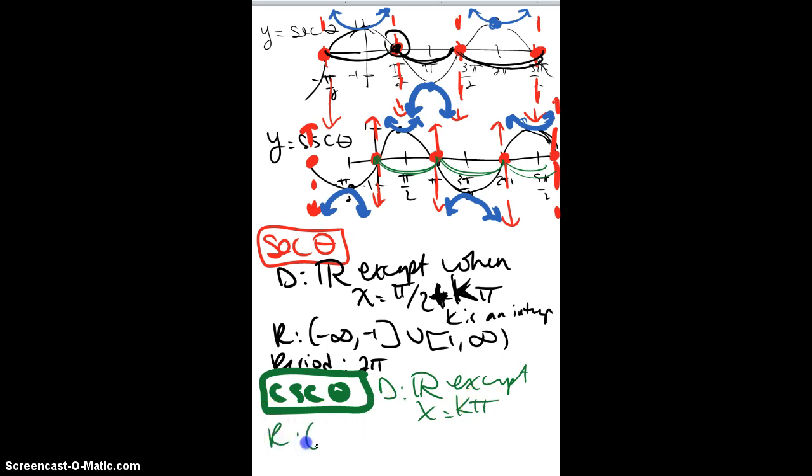My range is the same. It goes from negative infinity, stops at negative one, and then it picks up again at one and goes to infinity. And the period is still 2π.